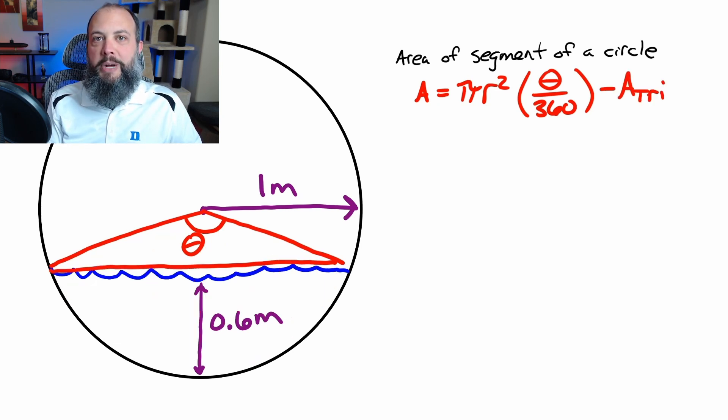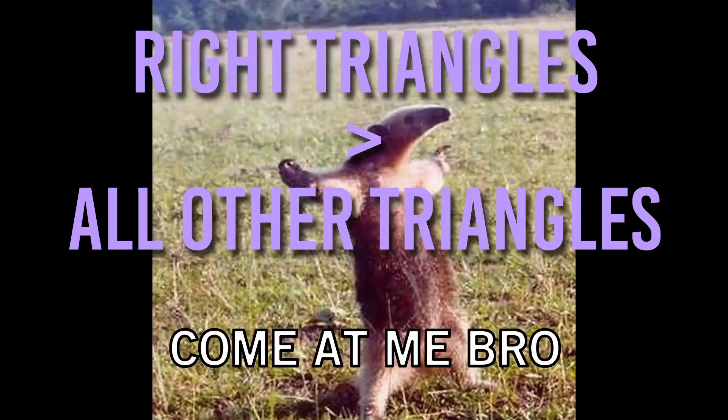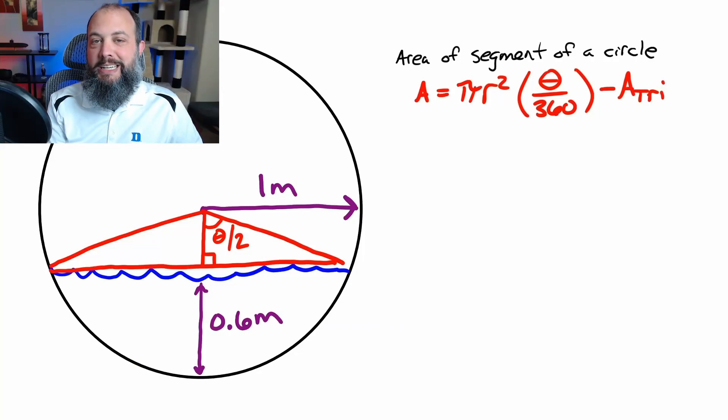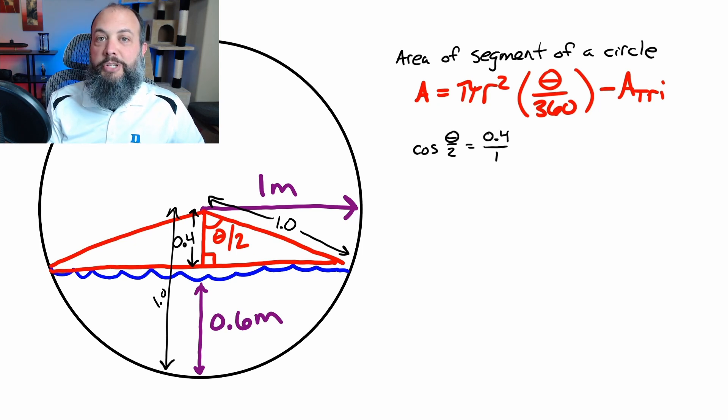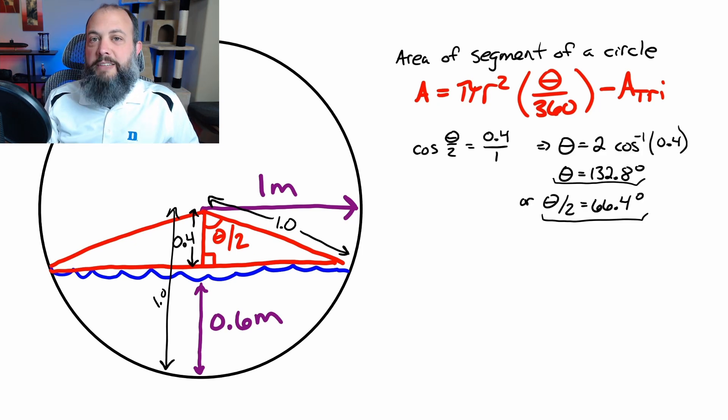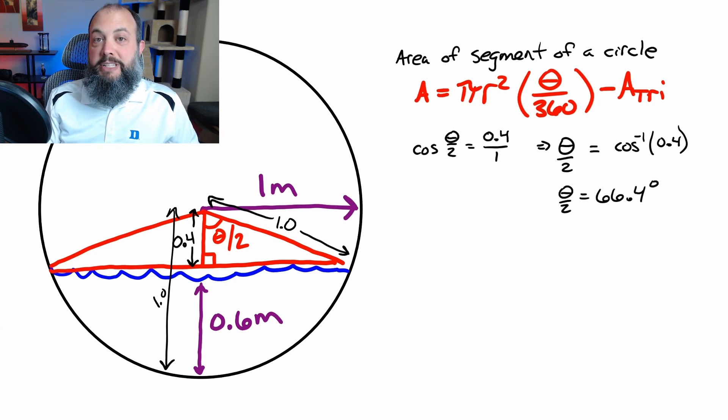In order to get only the area of the water flowing through the pipe, we'll additionally have to subtract the area of this red triangle. Since dealing with right triangles is always easier than dealing with any other kind of triangle, I'm going to cut this one right down the middle and make a right triangle. I already know two sides of this triangle: one is the hypotenuse because that's the radius of the pipe, and then also 0.4, because the radius is 1 and 0.6 is how deep the water is. That's going to let us find the angle because cosine is adjacent over hypotenuse, so that gives us the full angle or half angle whichever one we want to use.